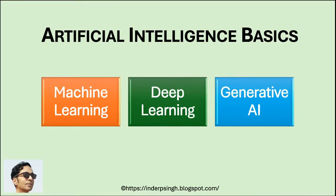Now that we have defined AI, let's dive into the artificial intelligence basics. AI is a collection of algorithms and technologies. Types of artificial intelligence include machine learning, deep learning — which is a subfield of machine learning — and generative AI.